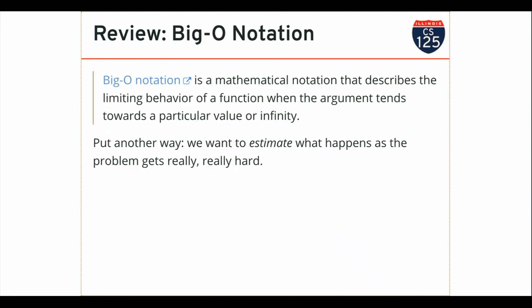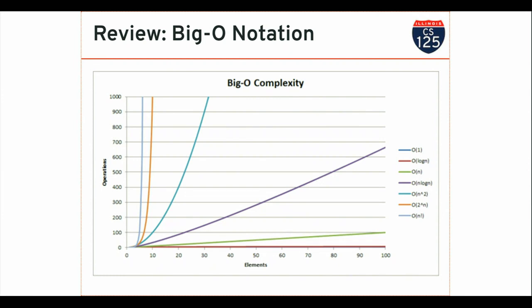The way we're going to do this in CS 125 this semester is try to put things into categories based on how their performance is related to their input, and to do this we use this idea of big O notation. Big O notation allows us to categorize the limiting behavior of a particular algorithm as its inputs get really big. Here's our favorite graph where we look at the different types of limiting behavior. Slowness — the time it takes the algorithm to complete — is on the Y axis, and the size of my input is on the X axis.